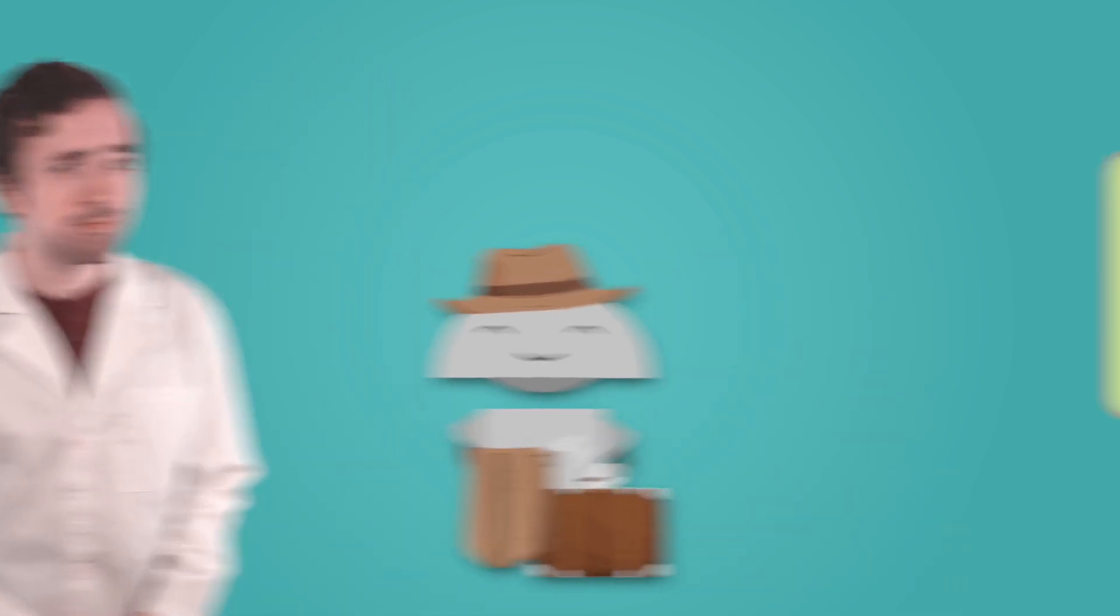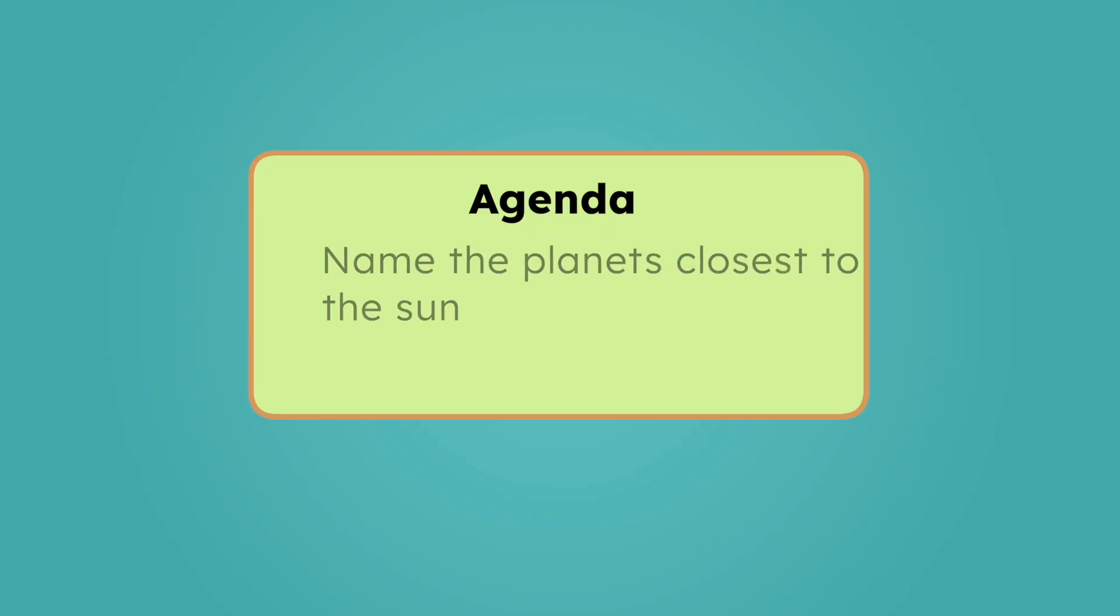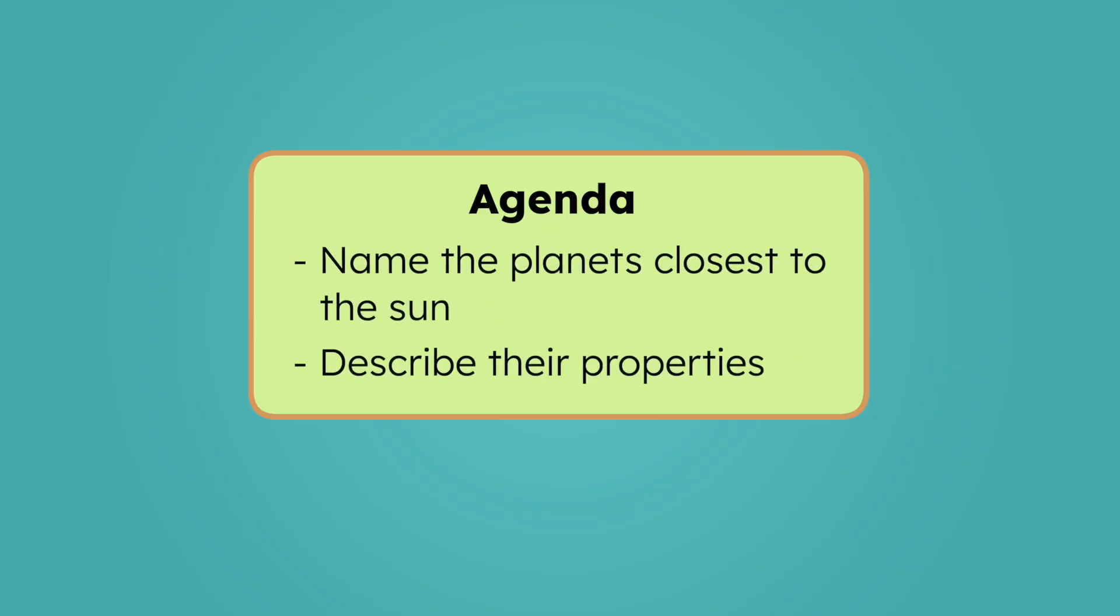They might all be planets, but each one is totally different. What do you think makes each planet so unique? By the end of today's lesson, you'll be able to name the planets closest to the sun and describe their properties. Let's investigate.